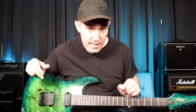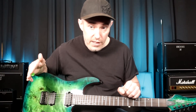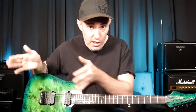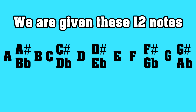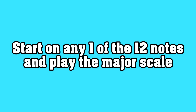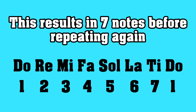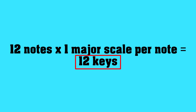In any given key there are exactly 7 notes. To determine what those 7 notes are, you start on any one of the 12 possible starting notes and play the major scale — the Do, Re, Mi, Fa, So, La, Ti, Do scale. We have exactly 12 notes to start on, and from that starting point you play the major scale. So 12 possible starting points times 1 default scale equals 12 possible keys. That's the math behind how many keys there are.